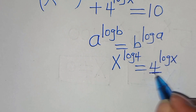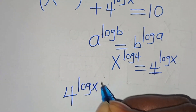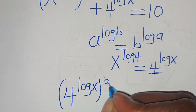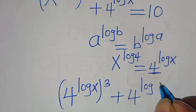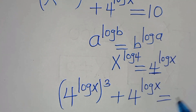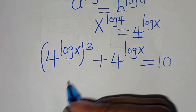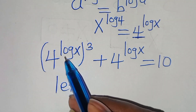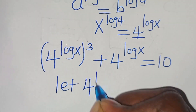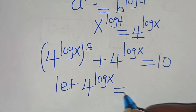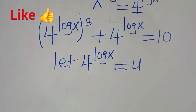Substituting this, we now have (4^(log x))³ plus 4^(log x), equal to 10. Since 4^(log x) is common, we let u equal 4 to the power of log x.